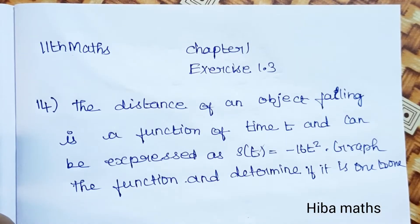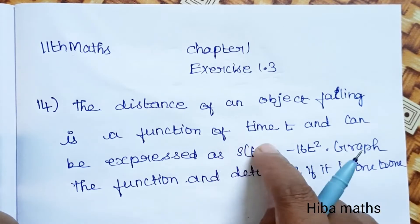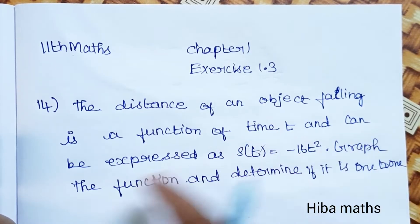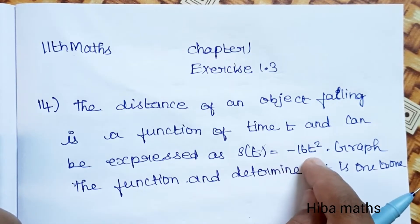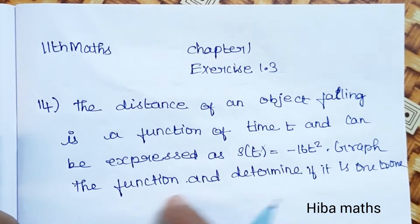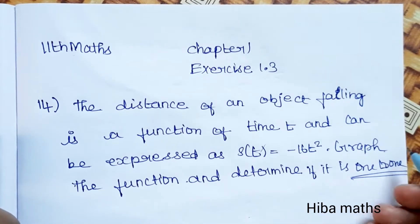Hello students, welcome to Hiba Maths, 11th standard Maths, Chapter 1, Exercise 1.3, question 14. The distance of an object falling is a function of time t and can be expressed as s(t) = -16t². Graph the function and determine if it is one-to-one.